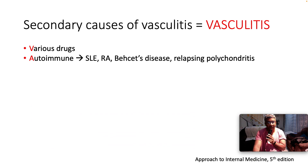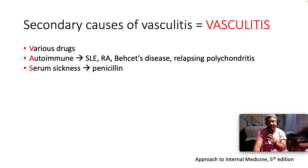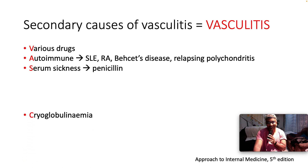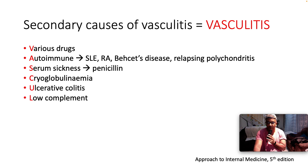V is various drugs — phenothiazine can cause it, hydralazine can cause it, propylthiouracil can cause it. A is autoimmune causes like systemic lupus erythematosus (SLE), rheumatoid arthritis, Behçet's disease, relapsing polychondritis. S is serum sickness in the context of penicillin use, cryoglobulinemia. C is ulcerative colitis. U is low complement.